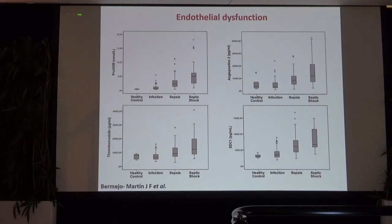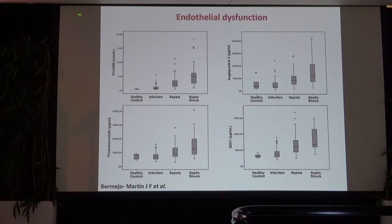We have biomarkers representing different levels of the endothelium — the glycocalyx, the cellular level, and the junctions — including pro-ADM, thrombomodulin, and syndecan-1. There is also a correlation between metalloproteinase levels and endothelial dysfunction. These biomarkers could be used to evaluate endothelial dysfunction at ICU admission in the future.